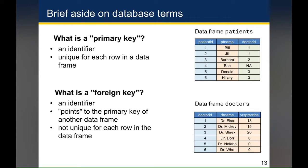In the patient's data frame, the patient ID is the primary key because it's unique for each row. Whereas the doctor ID isn't unique, so it's the foreign key. For example, patient Bill has doctor ID one, and Jill also has doctor ID one — meaning both Bill and Jill have Dr. Elsa as their doctor. In the doctor's data frame, the doctor ID is the primary key because it's unique to each value. There is no foreign key in the doctor's data frame because the patient's data frame is the main data frame, and the doctor's data frame contains information just about the doctors.